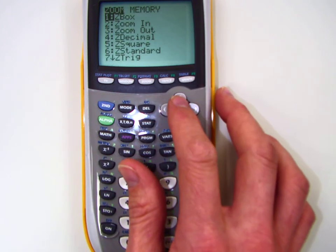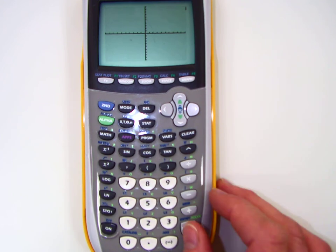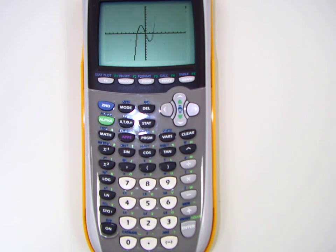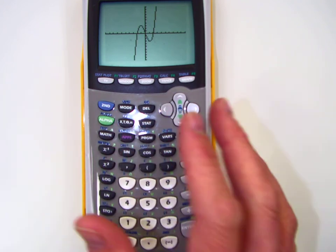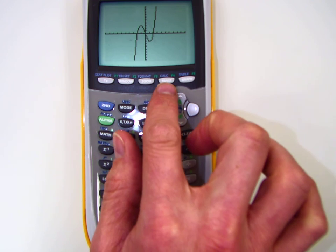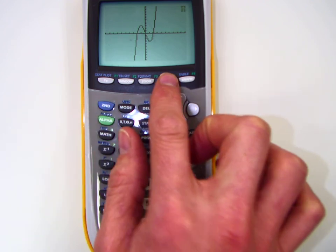Whenever I zoom, I tend to go back to the standard, the standard six. So we're going to stay with standard six right now. Now other things that are very useful, it's all about this button right here. If I hit second trace, I can find values.